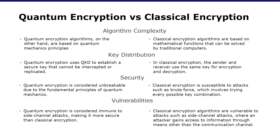Next is key distribution. In classical encryption, the sender and receiver use the same key for encryption and decryption. The key is shared over a communication channel, and the security of the communication depends on the security of that key. Quantum encryption uses a different approach, using QKD to establish a secure key that can't be intercepted or replicated. The shared key is then used to encrypt the message, making it completely secure.